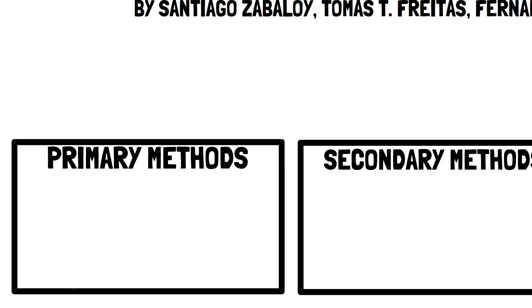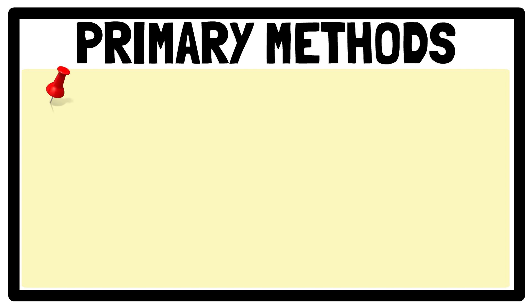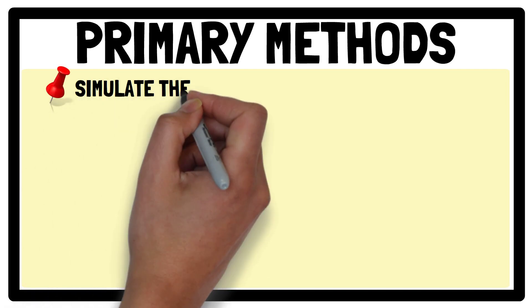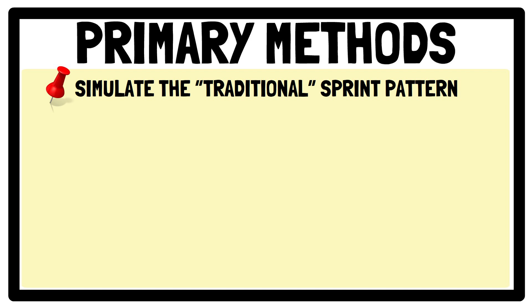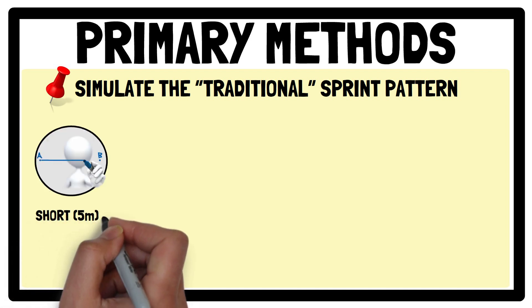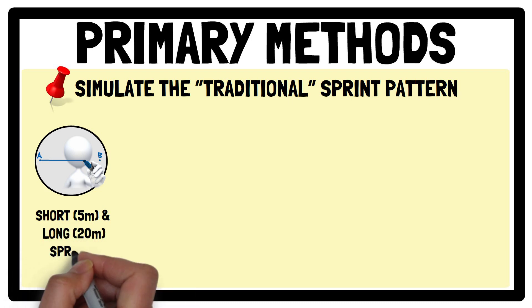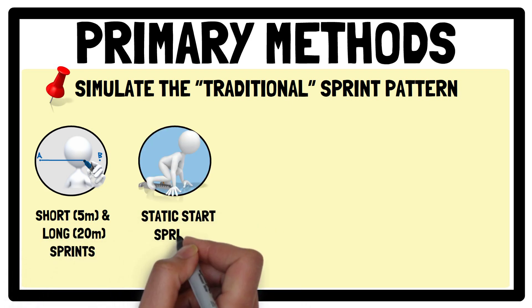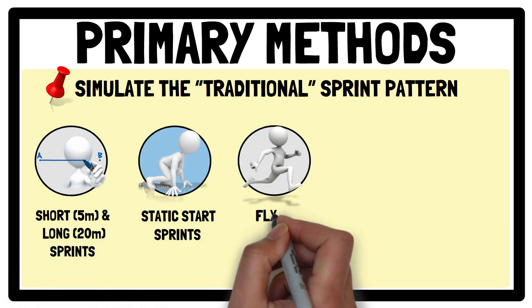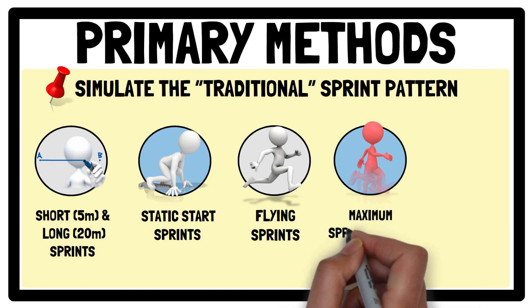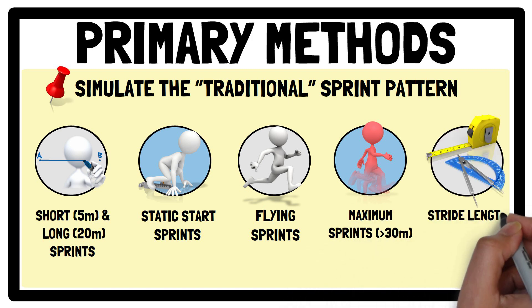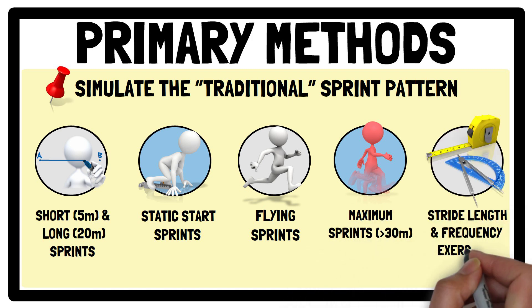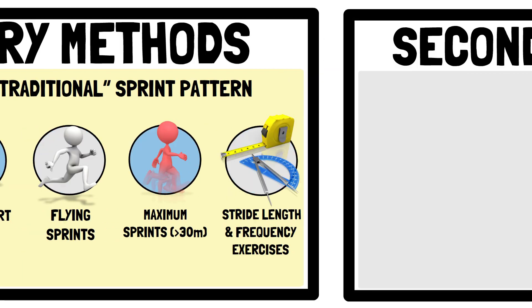Firstly, primary methods don't include sleds, as primary methods simulate the traditional sprint pattern based on the execution of unresisted sprint efforts. For example, implementing short and long sprints, static start sprints, flying sprints, maximum sprints, as well as stride length and frequency exercises.